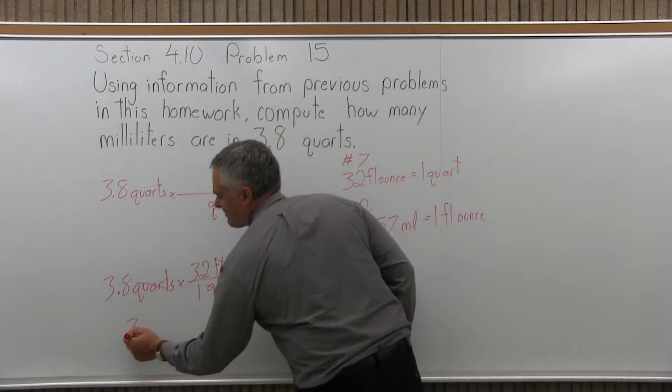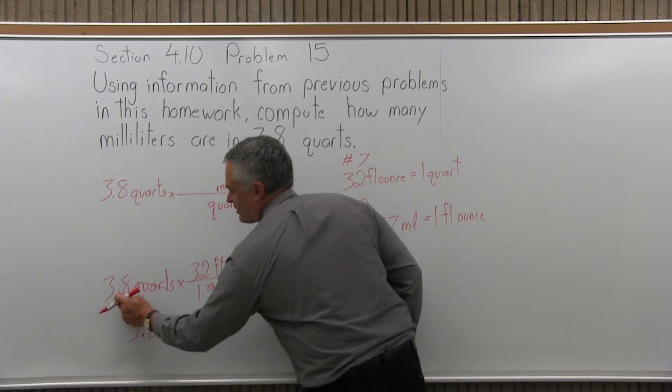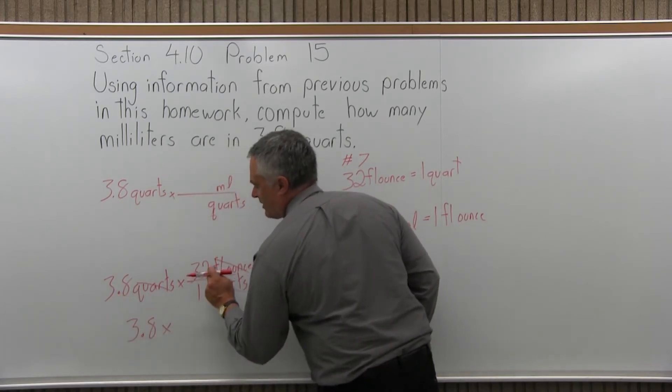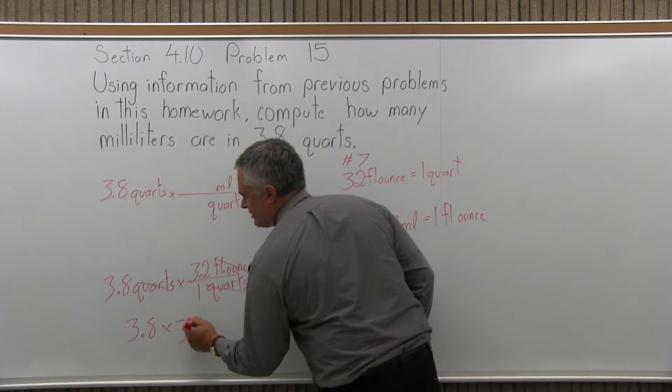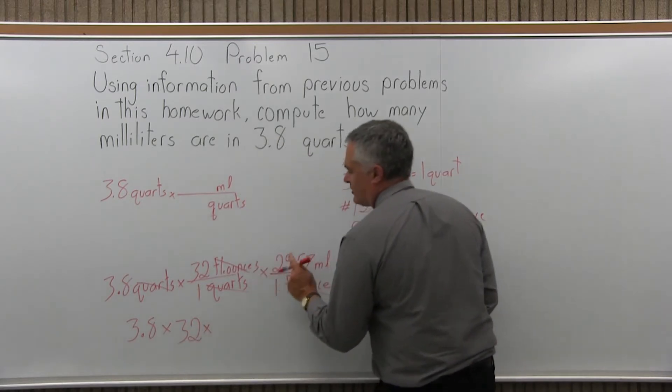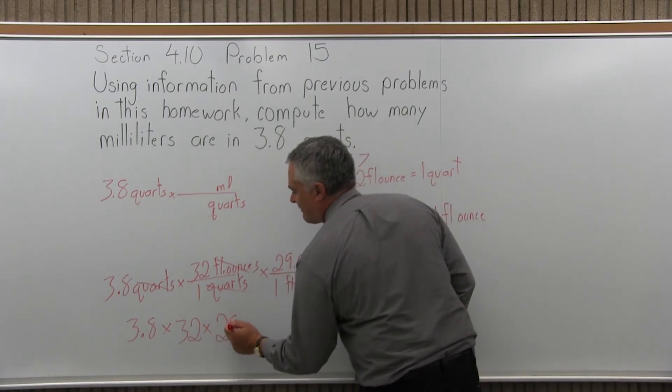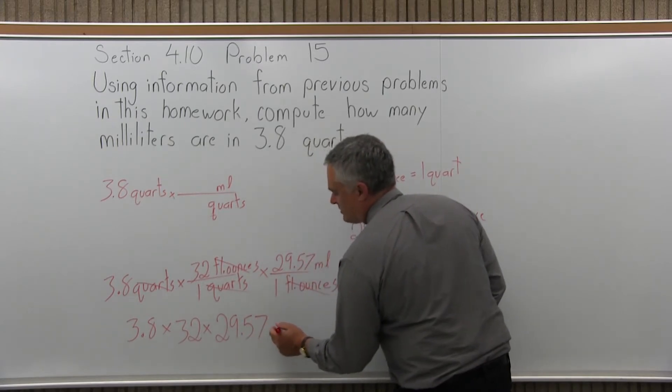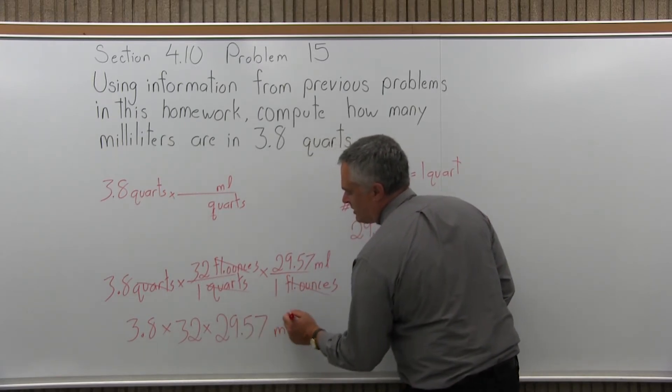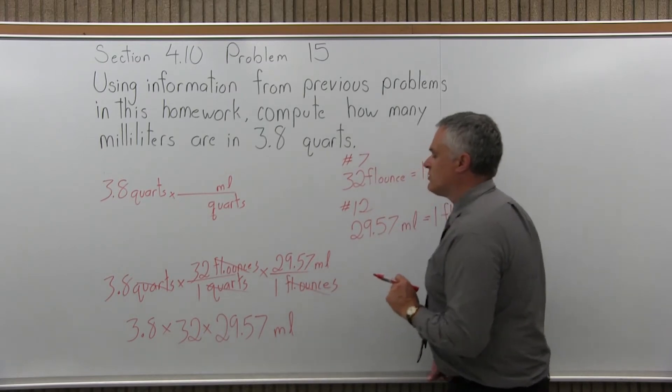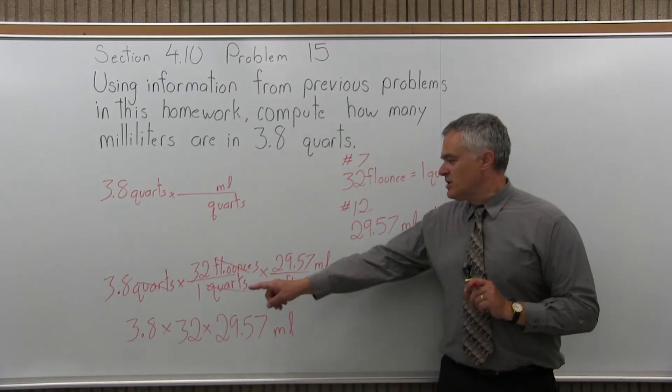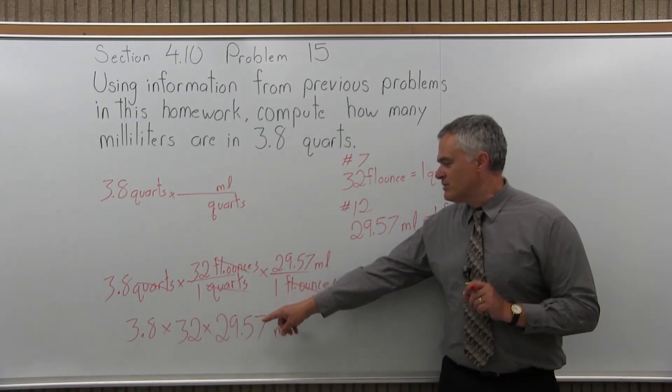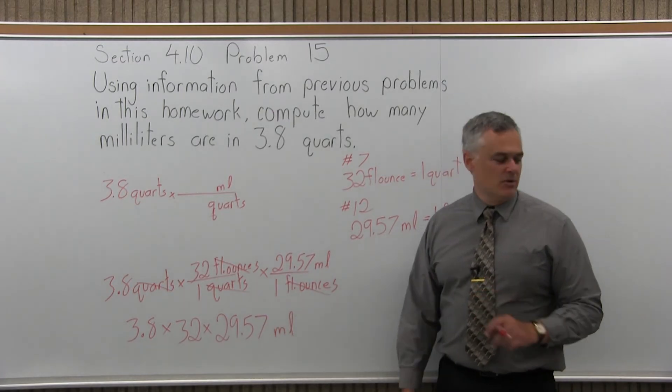So what's going to have to happen in terms of the number, I have a 3.8 in the numerator, 32 is also in the numerator, and 29.57 is also in the numerator. So I don't have any division. And the remaining units of measure will be milliliters. So I have to multiply 3.8 times 32 times 29.57 and it'll come out in milliliters.